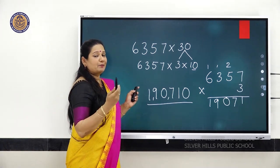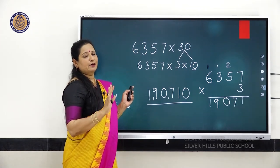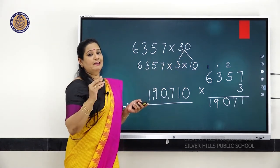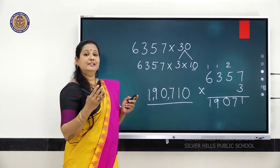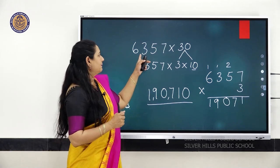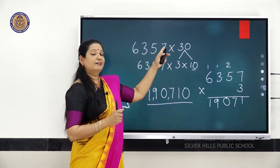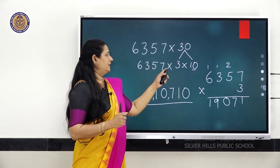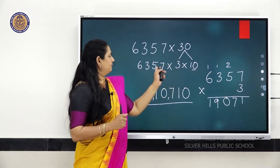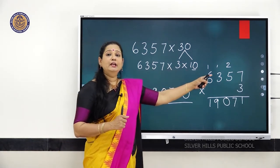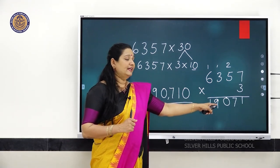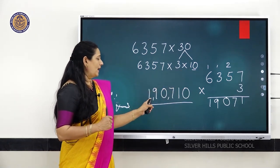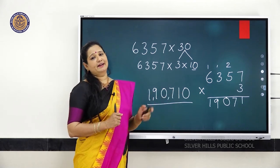If you multiply any number by the multiples of 10, first you break that number. If it is 40, break it into 4 into 10; if it is 60, into 6 into 10; if it is 90, into 9 into 10. The number 6,357 multiplied by 30 — first multiply 6,357 into 3 into 10, giving 19,071, and when you add that extra zero you get 1,90,710.